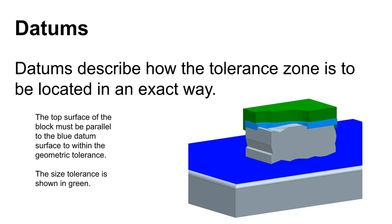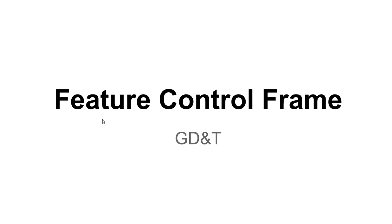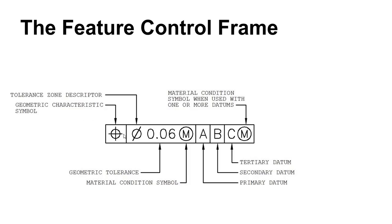We'll also use datums, which help us locate a part and position tolerance zones systematically. The feature control frame is the primary place where we request a geometric tolerance. First there's a symbol, then sometimes optionally a zone descriptor — in this case saying the zone is a diameter — then the geometric tolerance value. That number is not plus or minus; it is the size of the tolerance zone. In this case the tolerance zone has a 0.06 inch diameter. There's also a material condition symbol, and then the datums that help position that tolerance zone.